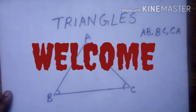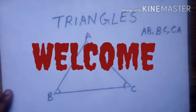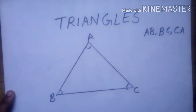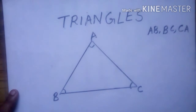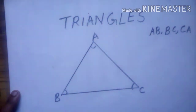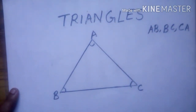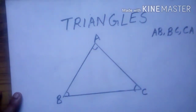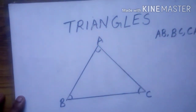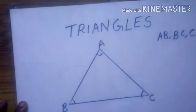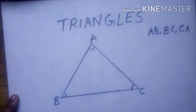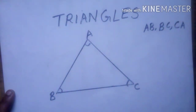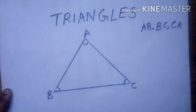Good morning, children. Last week we have learned about polygons. Polygons are simple closed curves made up of only line segments. When the line segments join together in a closed curve, it forms a polygon. Today our topic is triangle, related to a polygon itself.